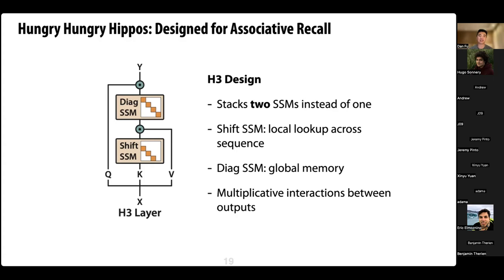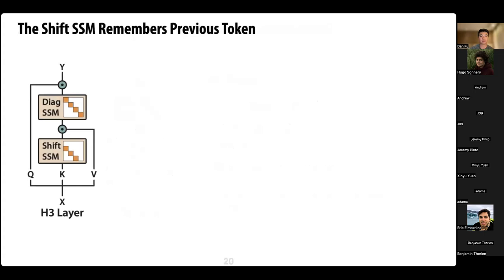The last important piece is multiplicative interactions between different projections of the input — represented by those multiplicative gates. You take three projections of the input: run one through the shift SSM, do a multiplicative interaction with another input, run that through the diagonal SSM, and do a multiplicative interaction with the last output. If you're familiar with Hyena, it takes this and generalizes it — replacing the diagonal SSM and adding more small convolutions to the input.